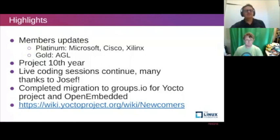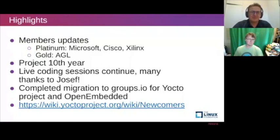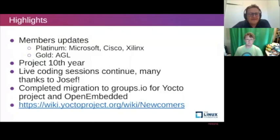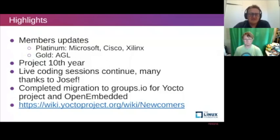We moved the infrastructure for all the mailing lists for the Yocto Project and OpenEmbedded to groups.io. It's done, and we don't have much to say because it just works — all the lists are now hosted on groups.io. For people who want to start contributing, fixing a simple bug and getting something merged upstream, we have a specific wiki page with entry points for people who want to start on small bugs.